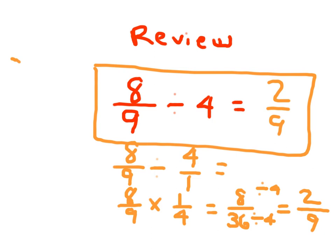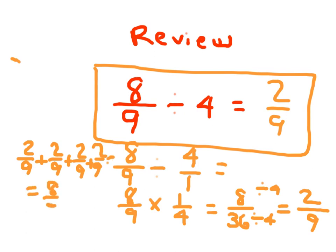And this does make sense. If I did put 4 of those 2 ninths together, I would get 8 ninths, because I had to divide it by 4 there. Thank you.